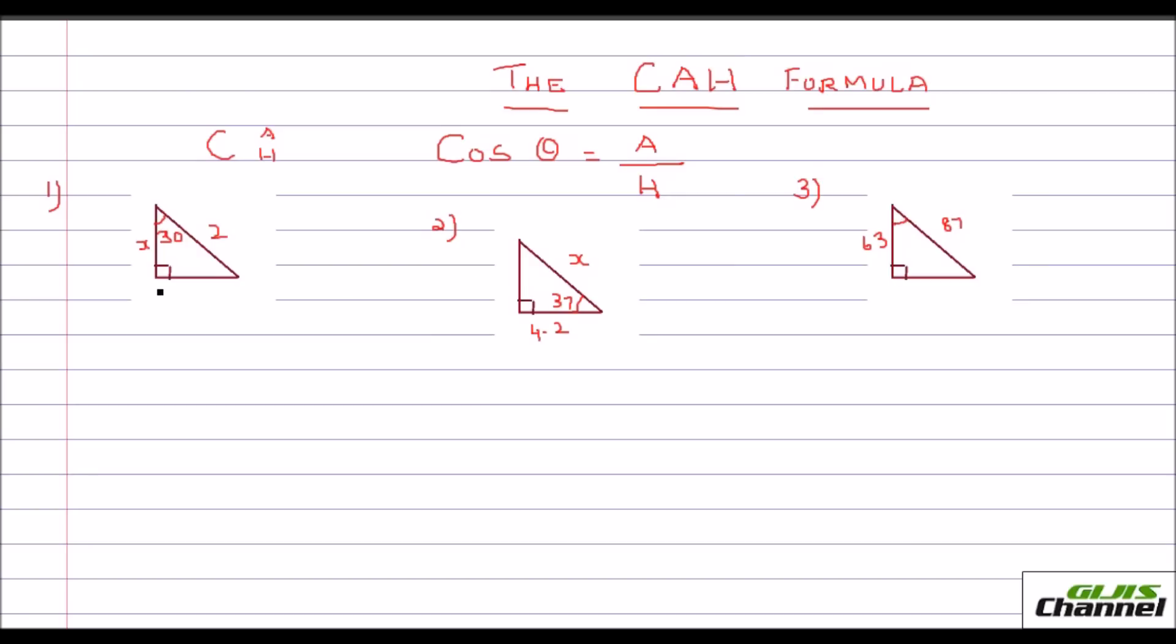Here I thought I will do few problems with the CAH formula. So I have taken three different types of problems. The first one, the adjacent side is unknown. They have given you the theta and the hypotenuse.